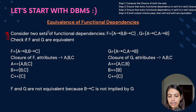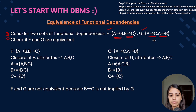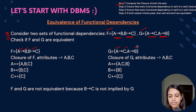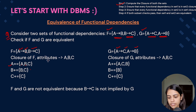Let's understand from an example. We have two functional dependency sets: F = {A→B, B→C} and G = {A→C, A→B}. Both have attributes A, B, and C. Step 1 is to compute the closure of all attributes in F. A+ in F: A determines B, and B determines C, so A+ = {A, B, C}. B+ in F: B determines C, so B+ = {B, C}. C+ in F: C determines only itself, so C+ = {C}.